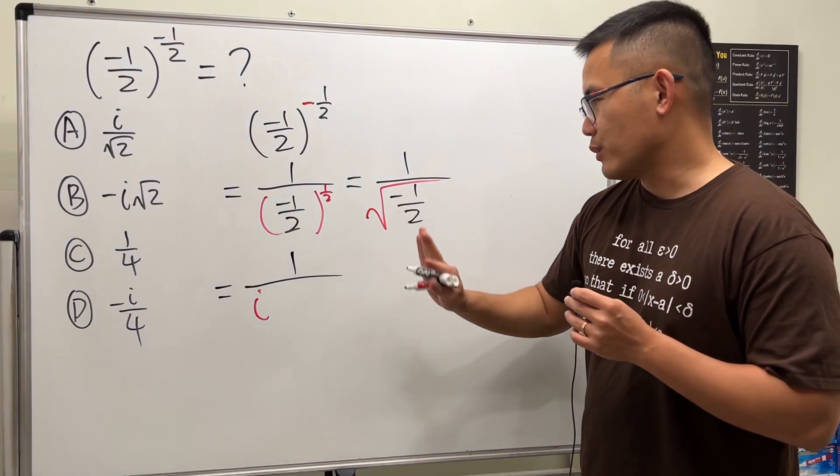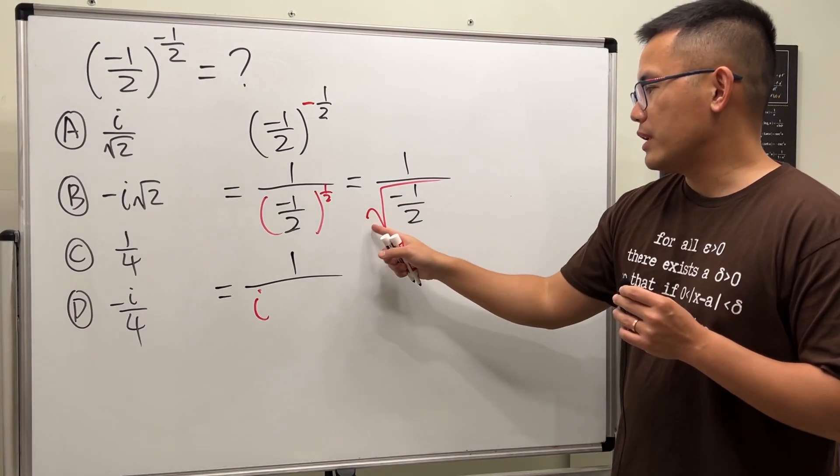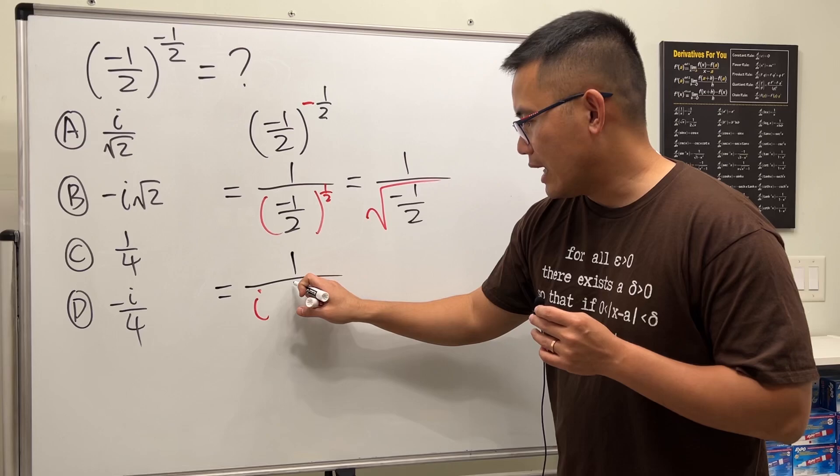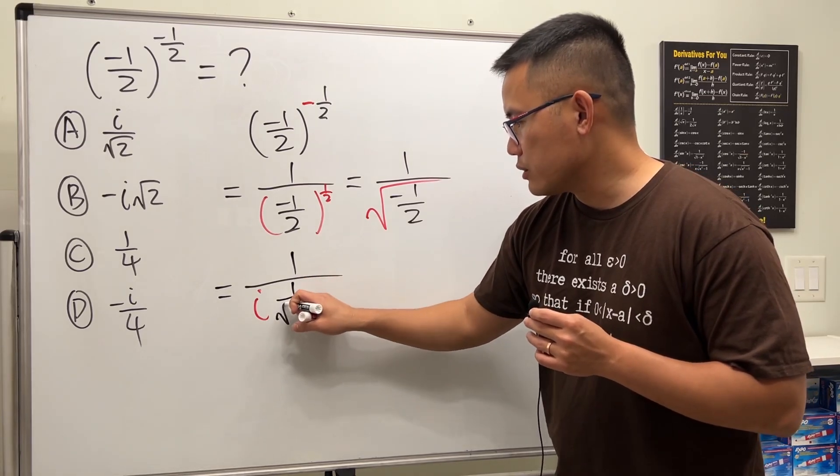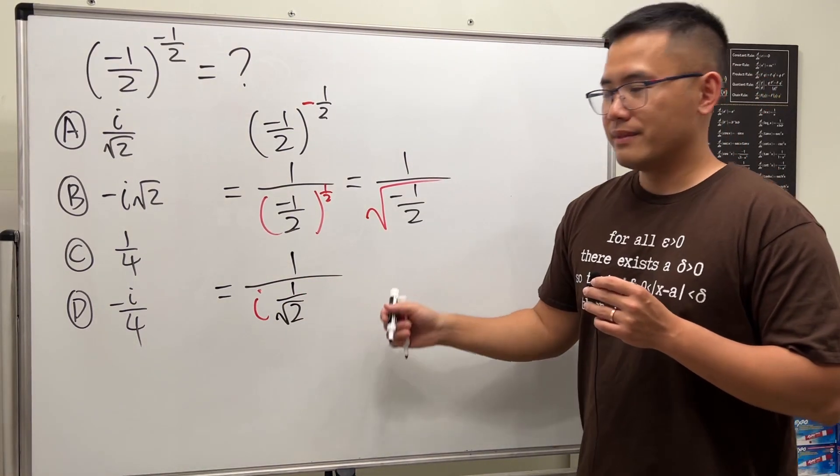And then take the square root of one—it's just one, so we don't need to worry about that. And then we take the square root of two, so we have one over square root of two, just like this.